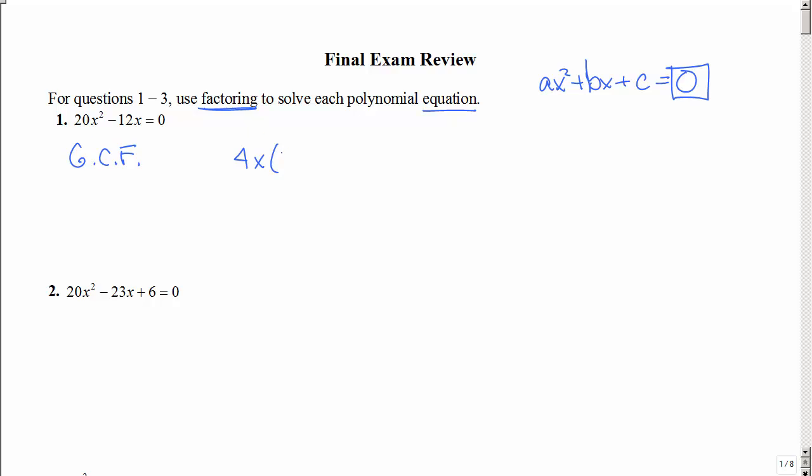So if I divide both by 4x, I would be left with 5x minus 3. It's set equal to zero. I have factored. Now what do I do next? I set each factor equal to zero. Then just solve for x. And so I have two answers.